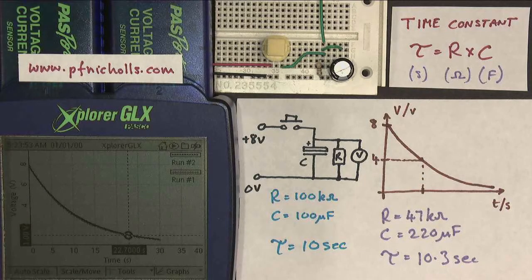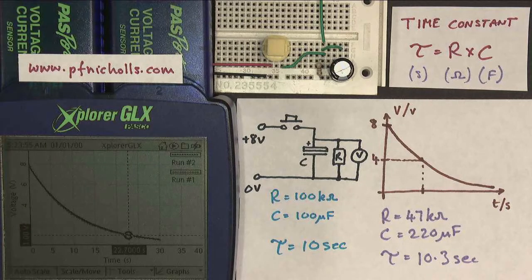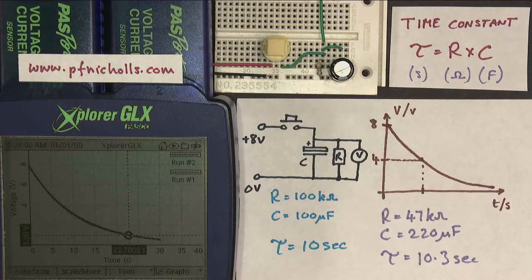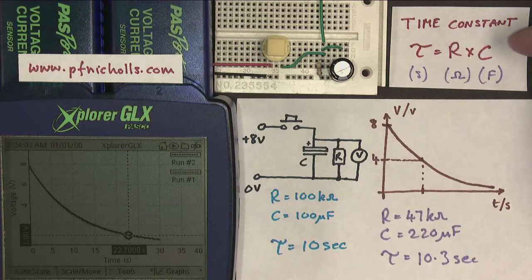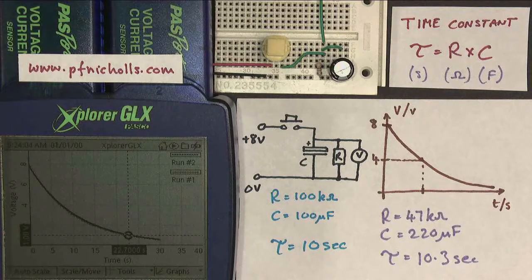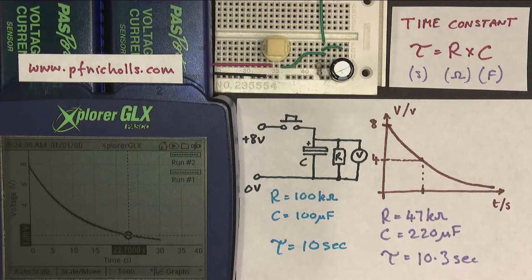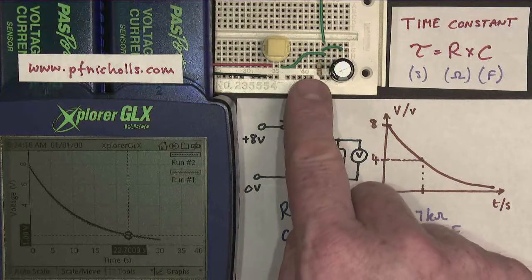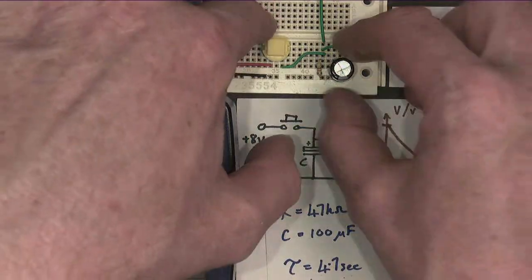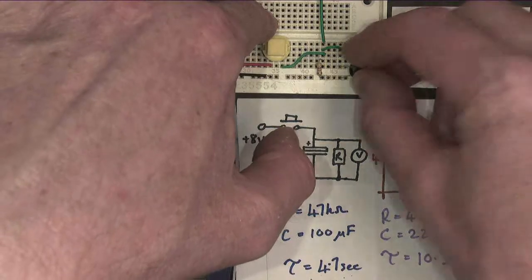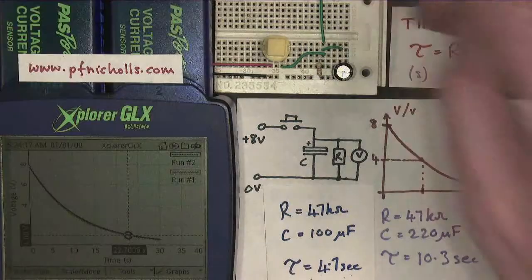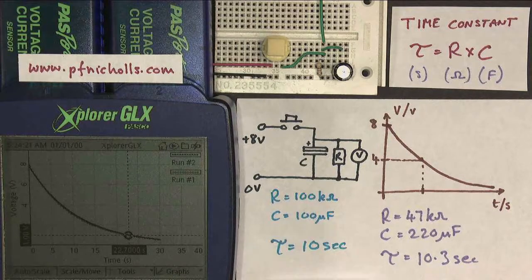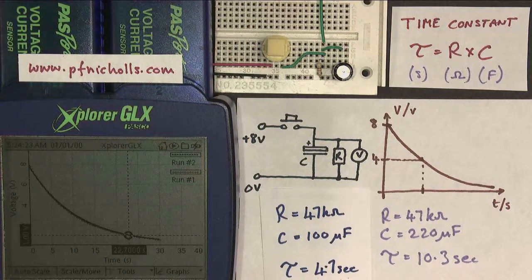So, so far, what we've seen is that the time that it takes to get to half its value is 0.7 RC. And we've seen that if R times C is the same, the graphs look the same. But what happens if R times C is not the same? Let's consider this example. So we'll leave the 47 ohm resistor there. But we'll put the 100 microfarad capacitor back in. And what that means is that my time constant is now shorter. It was 10 seconds. It's now 4.7 seconds.